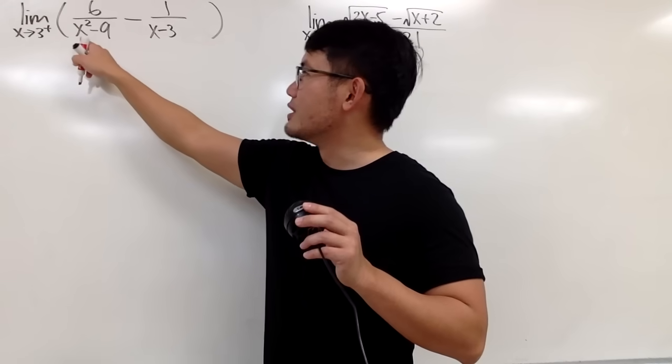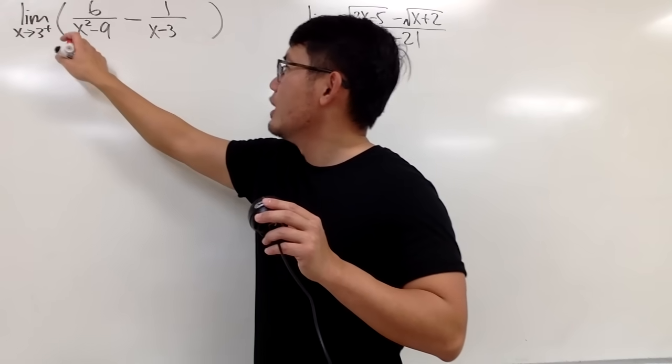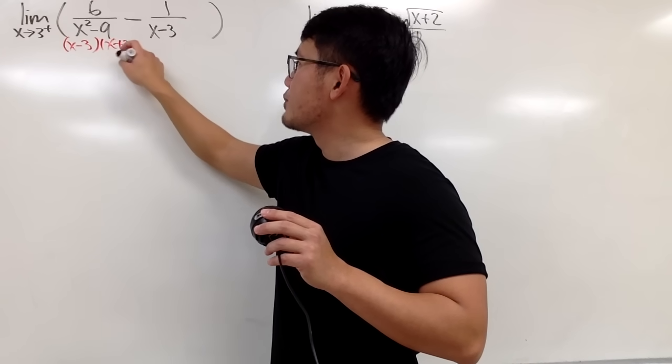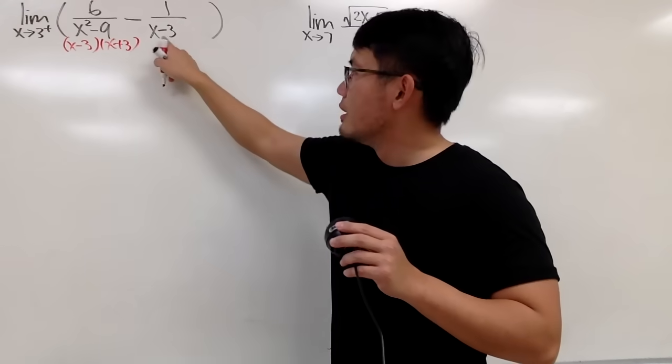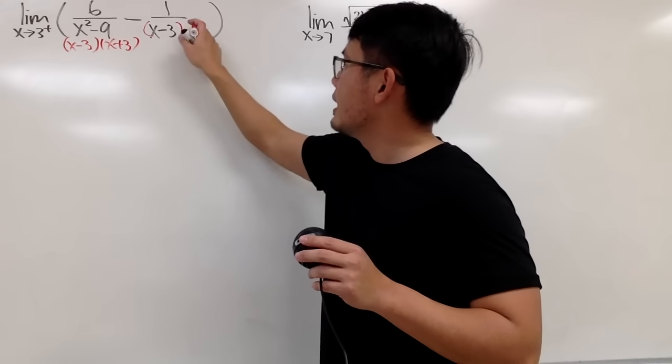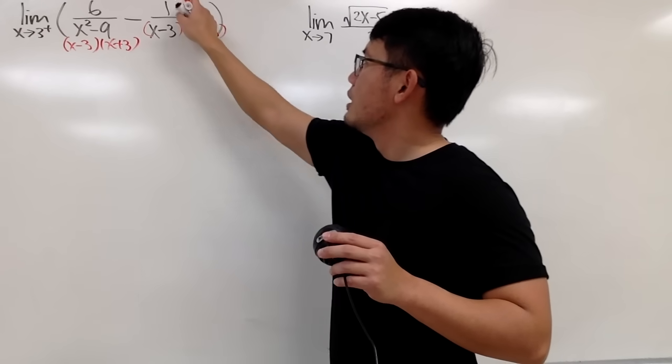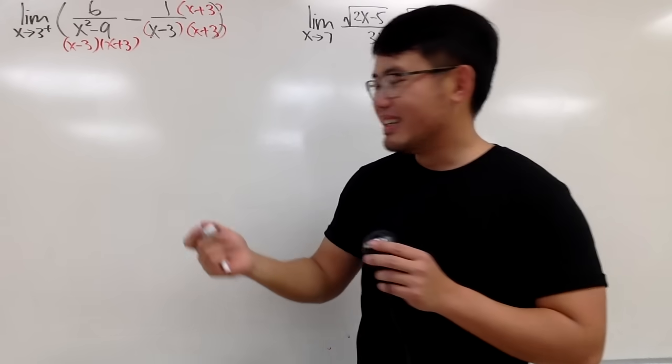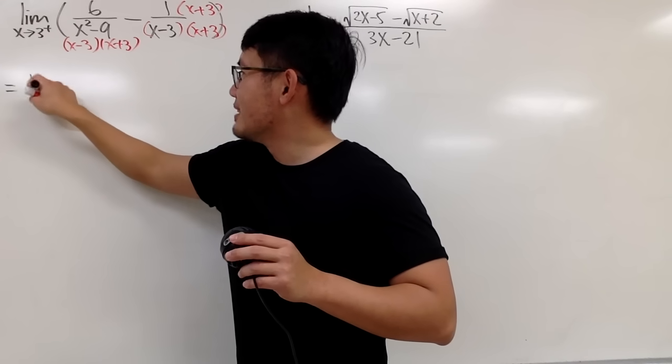It's not that bad because we see this is x squared minus 9. We can just go ahead and factor it to be x minus 3 times x plus 3. Here we only have x minus 3. Let's just multiply the bottom and the top by x plus 3 so that they will have the same denominator. This way we can just combine the fractions.